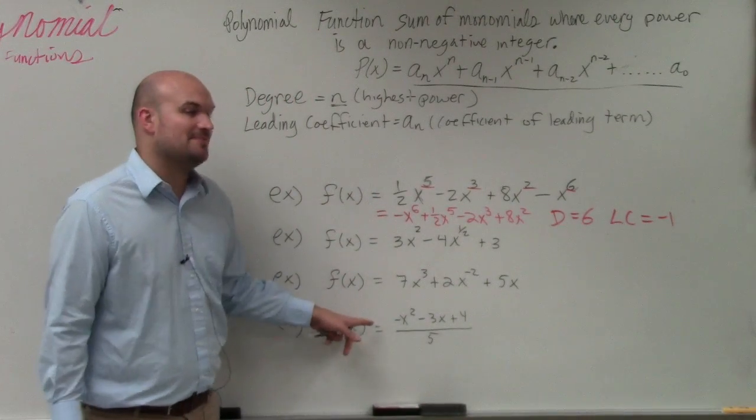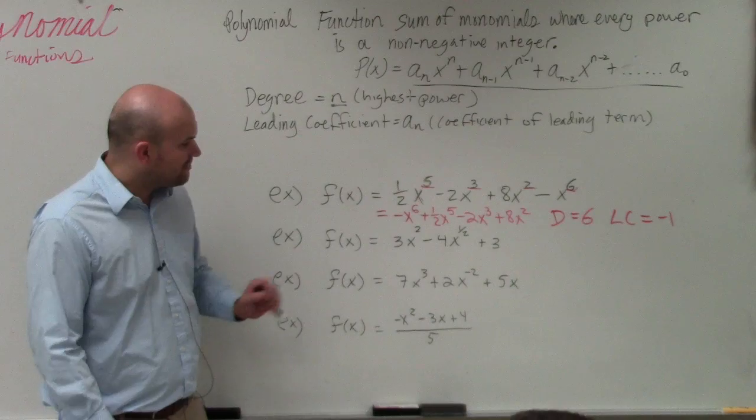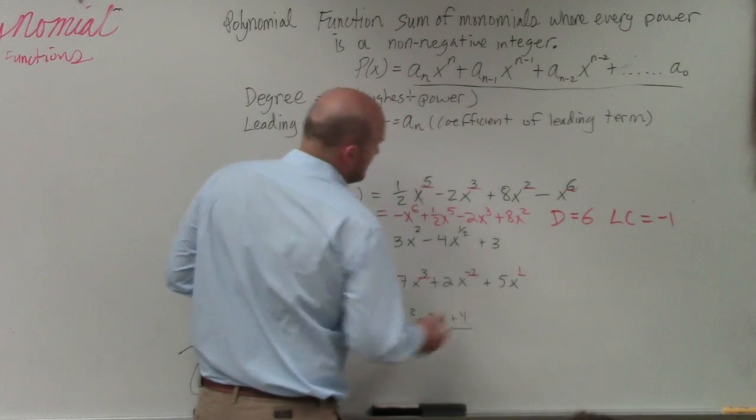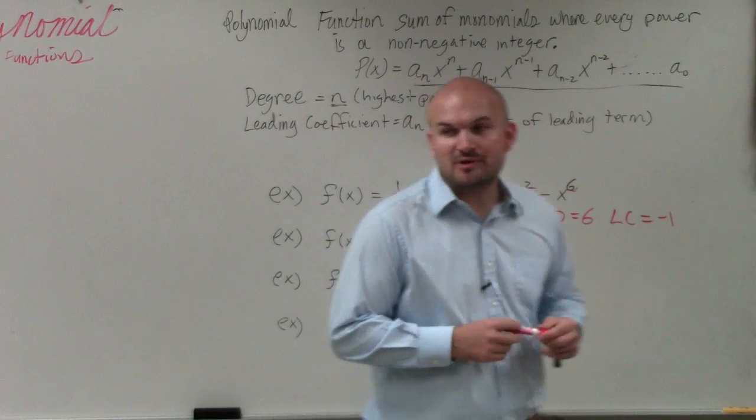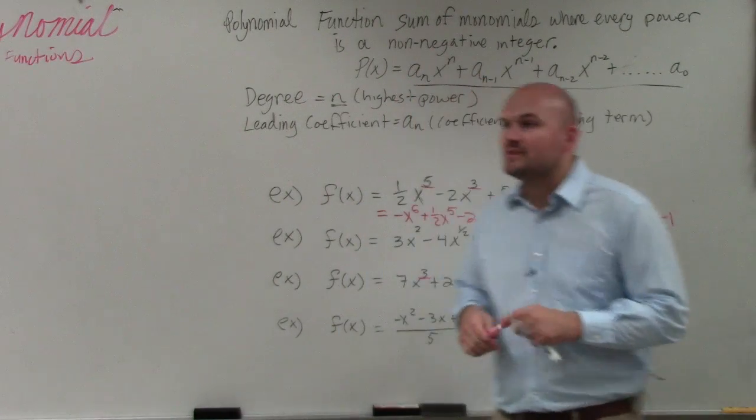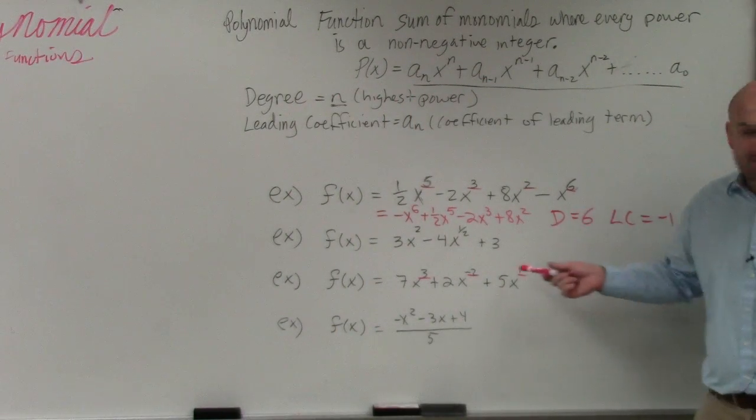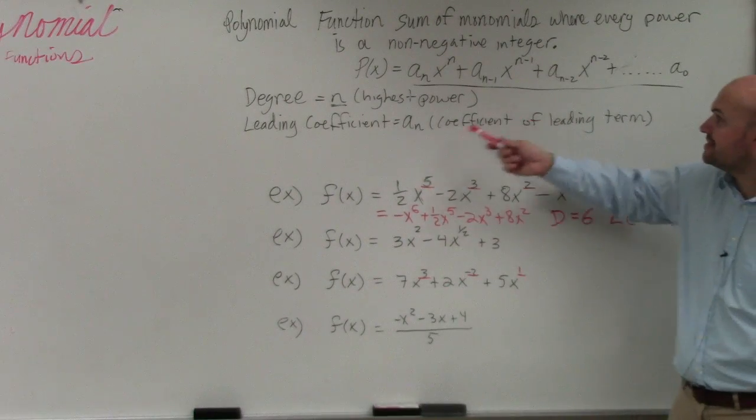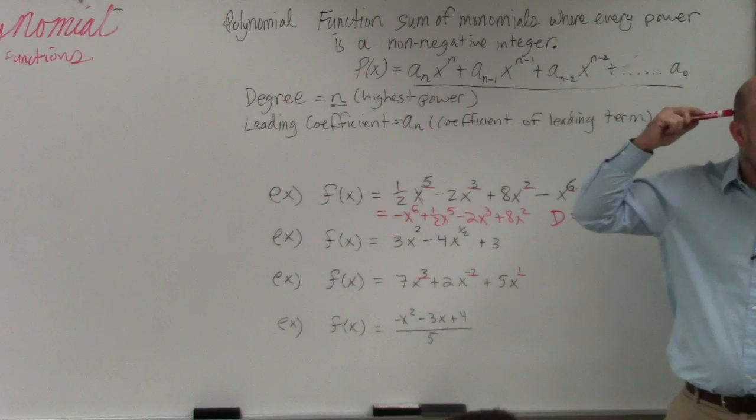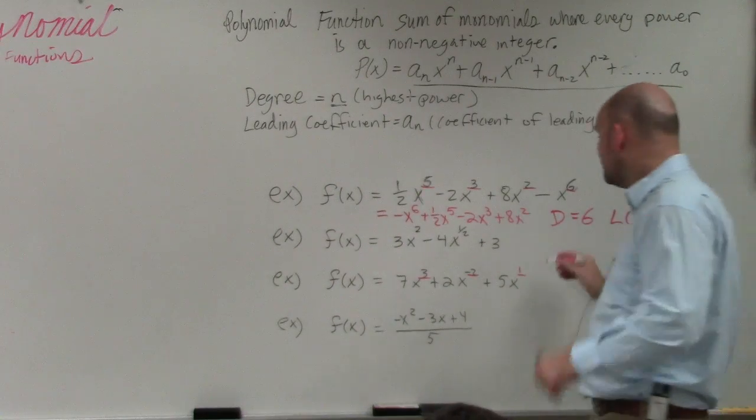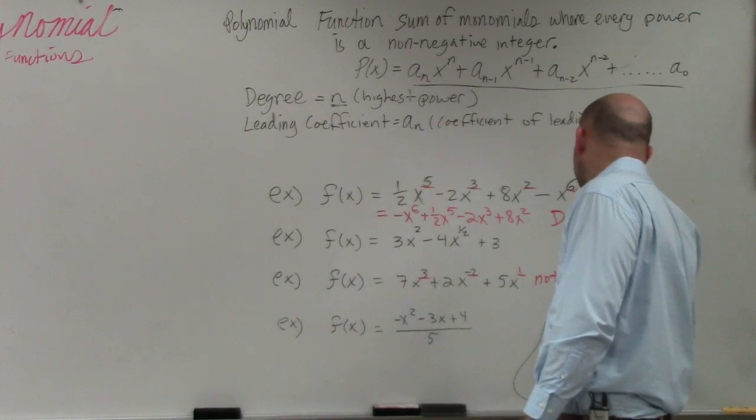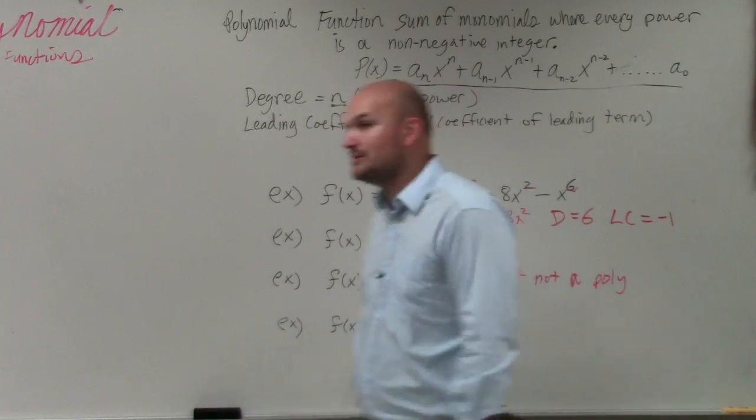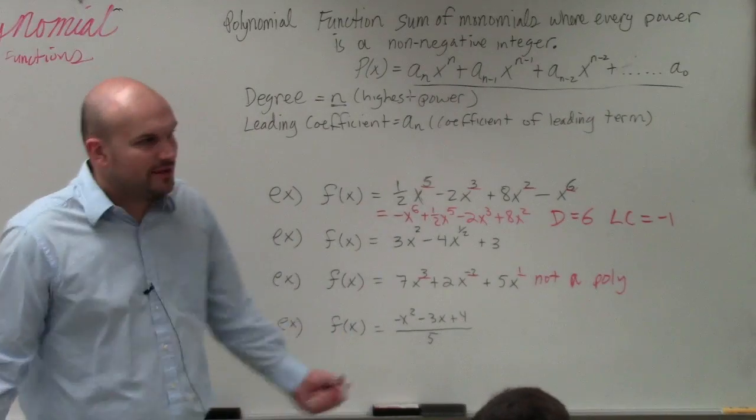So let's skip down to example number 3. Example number 3, we look at all of our powers that we have. Remember, if there's not a power, you can represent it as a 1. So if we're looking at all of our powers, and we see that one of them is a negative, well, now that contradicts my non-negative integer statement. Correct? So we don't have to find the degree in the leading coefficient. We just say not a polynomial.